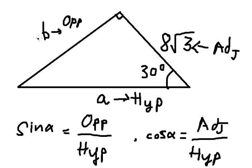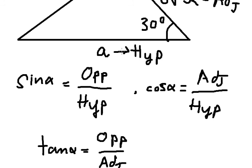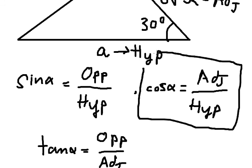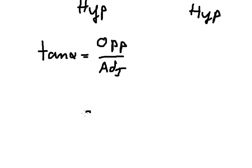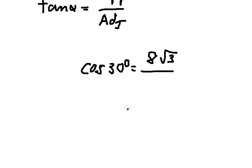So we want to find b and a. We have adjacent, so we have a here, so we can use this formula. I will put this one on the left, cosine 30 degrees on the right.